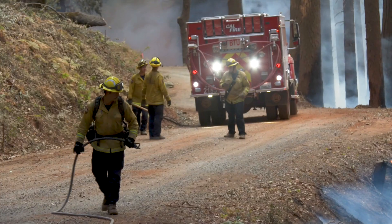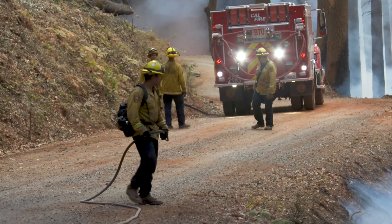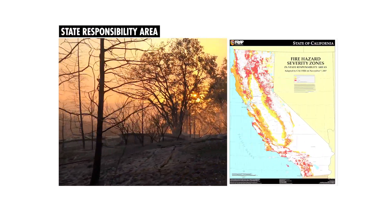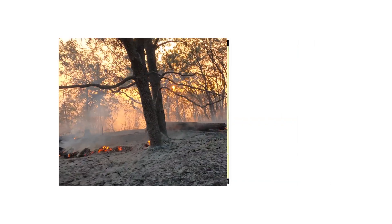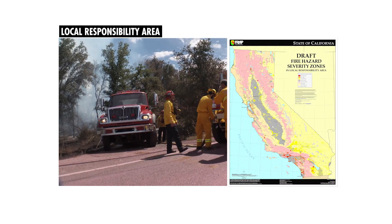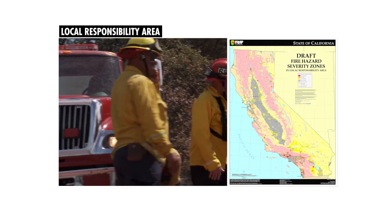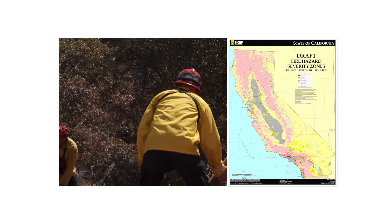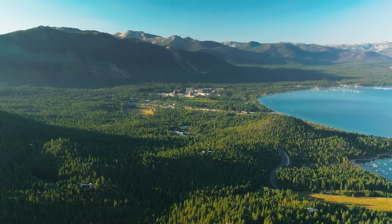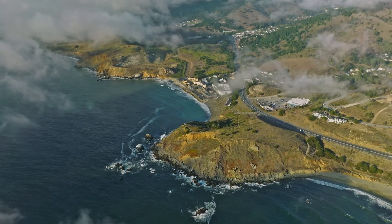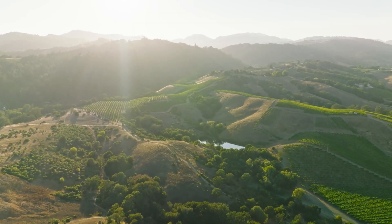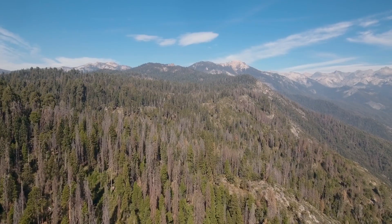CAL FIRE is required by state law to classify the severity of fire hazards in California. These fire hazard severity zones are in both the state responsibility area, where the state has financial responsibility for wildland fire protection and prevention, and the local responsibility areas, where the local government is responsible for wildfire protection. Whether it's Lake Tahoe's majestic mountain lines or Santa Barbara's scenic coast, the updated maps incorporate improved fire science that accounts for the unique wildfire hazards throughout the state of California.